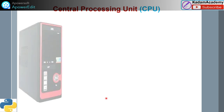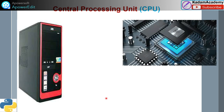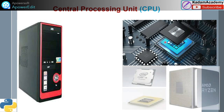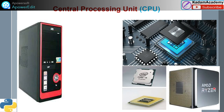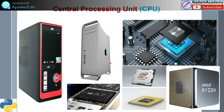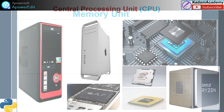The central processing unit — you can visualize it with all the memory chips shown here. Intel and AMD are examples of CPU manufacturers. This microprocessor shown is from Apple, and AMD is another company that produces CPUs.